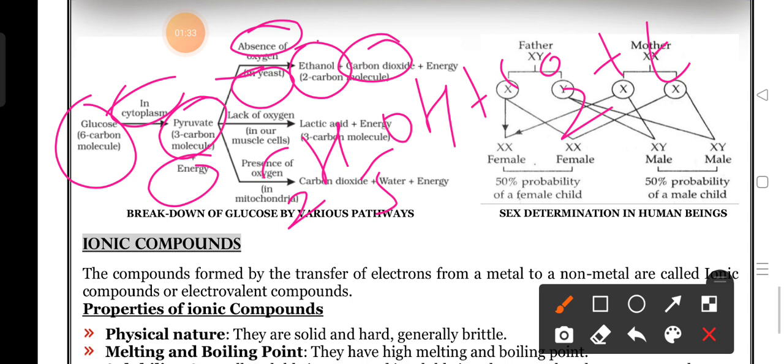Glucose breaks down into pyruvate. Pyruvate, in the absence of oxygen, in yeast cells undergoes fermentation and gives products like ethanol, carbon dioxide, and energy. In another case, glucose is converted into pyruvate in the cytoplasm, and pyruvate in the absence of oxygen - in our muscles - turns into lactic acid. Lactic acid is also a three carbon molecule, liberating a small amount of energy.